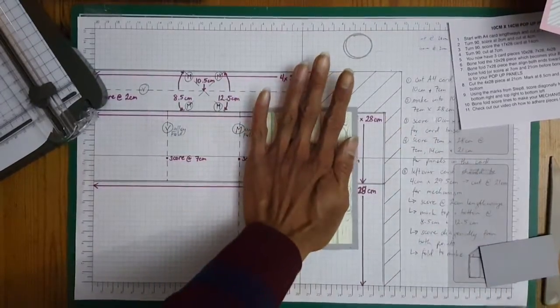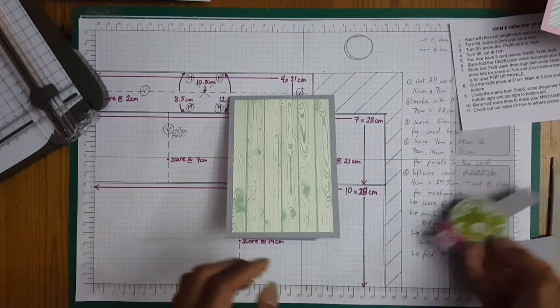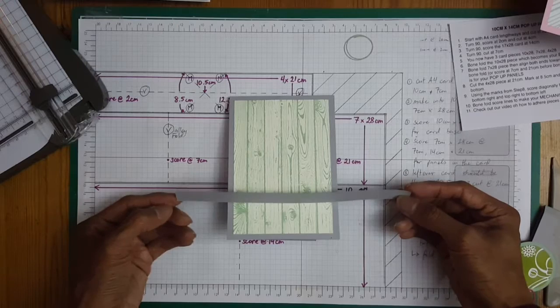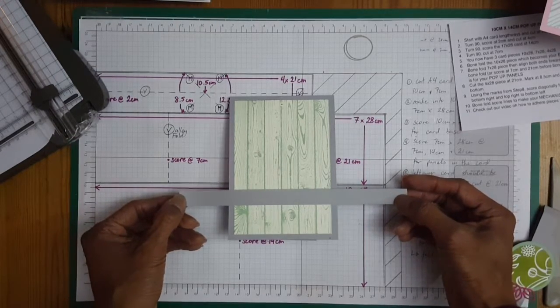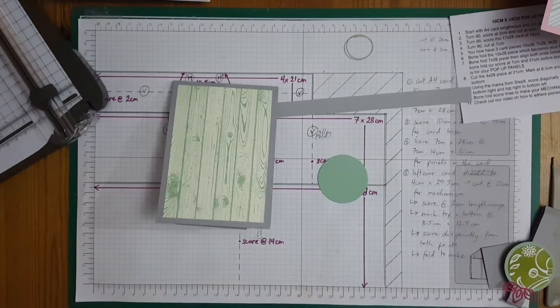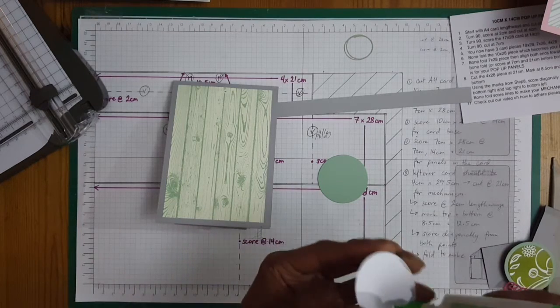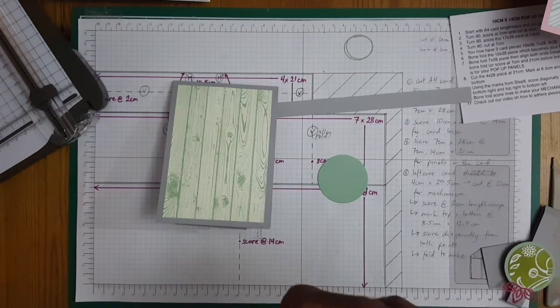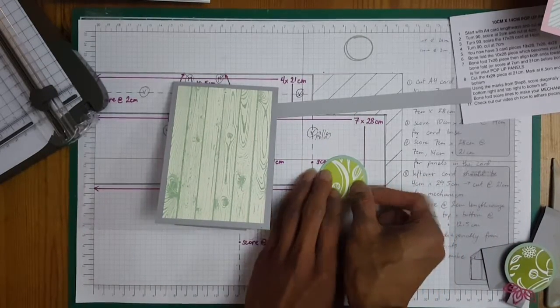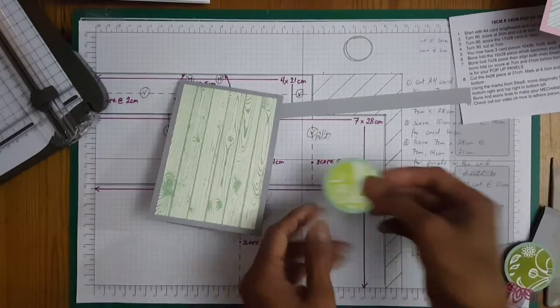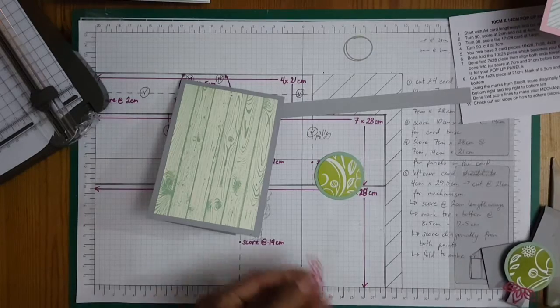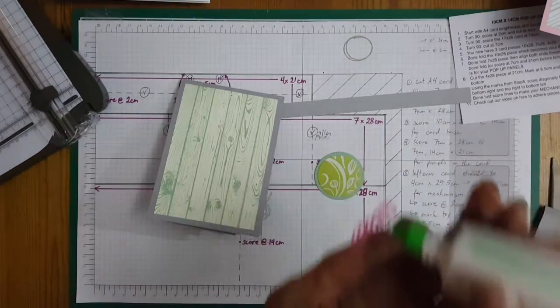And finally for the belly band, so I have another Smoky Slate card, 1.5 by 21 centimeters. There. Mint Macaron card. I'm just gonna add the DSP on top. Use the other half of the Flourish die.